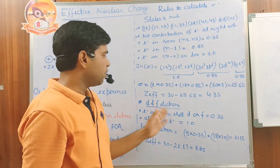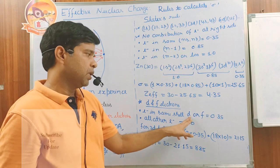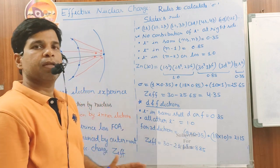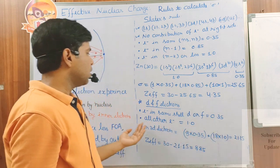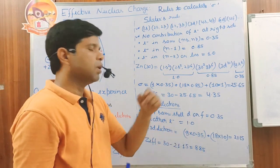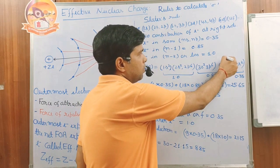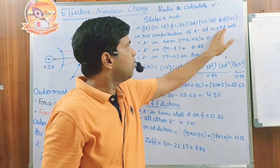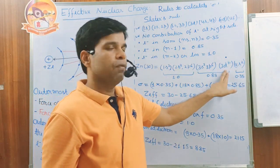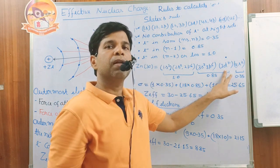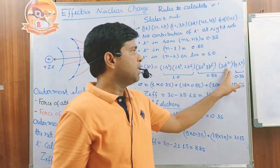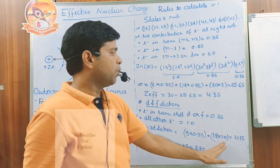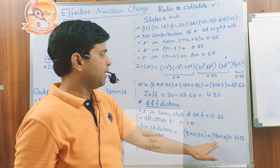For d or f electrons, the rules differ: electrons in the same d or f group each contribute 0.35, and all electrons to the left side contribute 1.00. To calculate Sigma for one of the 3d electrons of zinc, the remaining 9 electrons in the same 3d group contribute 0.35 each, and all electrons to the left — 18 electrons in (2s 2p) and (1s) — contribute 1.00 each.